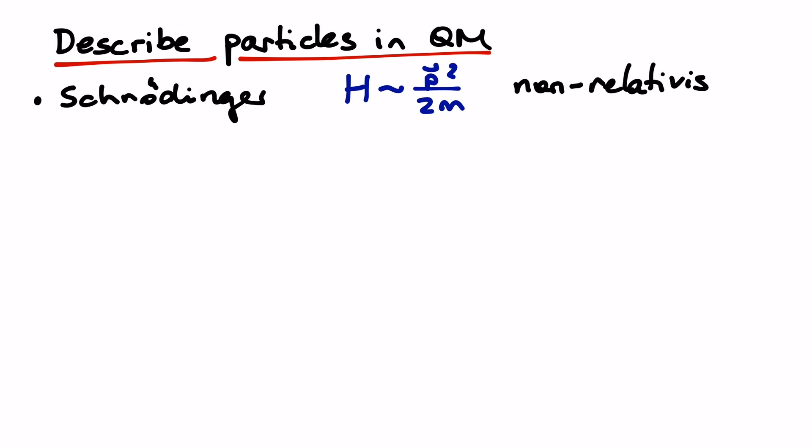How can we describe particles in quantum mechanics? The Schrodinger equation takes the Hamiltonian p squared over 2m, but this is the classical energy-momentum relation.